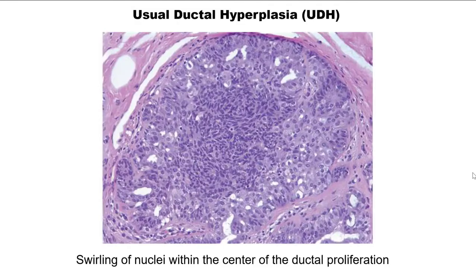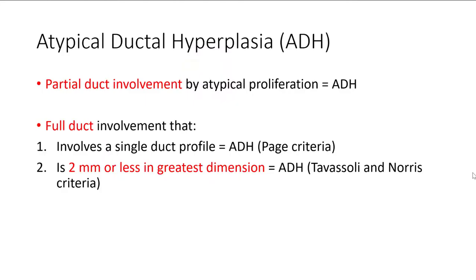Partial duct involvement by an atypical ductal proliferation is the defining feature of atypical ductal hyperplasia. If there is full duct involvement, how much is enough to call ductal carcinoma in situ depends on which criteria you use. The Page criteria states that involvement of a single duct profile should be classified as atypical ductal hyperplasia — you need more than one fully involved duct profile to call it low-grade DCIS. The Tavisoli and Norris criteria is size-based: two millimeters or less is atypical ductal hyperplasia; greater than two millimeters is low-grade ductal carcinoma in situ.